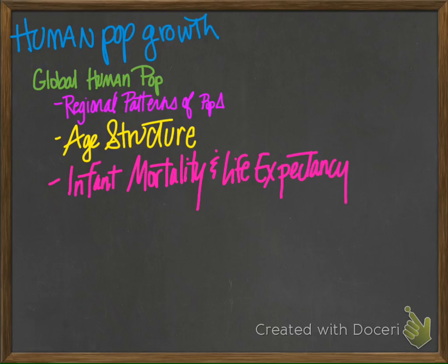That's like adding another Amarillo every day, and it takes about four years to add the equivalent of another United States to the world population. Estimates for where we'll end up by 2050 are somewhere between 7.8 and 10.8 billion people, which is the average of what's predicted.